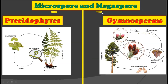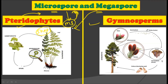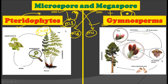The next important difference relates to microspore and megaspore shedding. Heterospory is found in both pteridophytes and gymnosperms, but in pteridophytes both the microspores and megaspores are shed from their respective sporangia. In gymnosperms, however, the microspores are shed from the microsporangium, but the megaspores do not shed from the megasporangium — they remain in the megasporangium until pollination and fertilization.